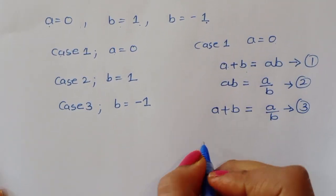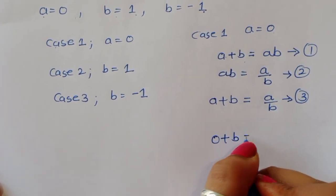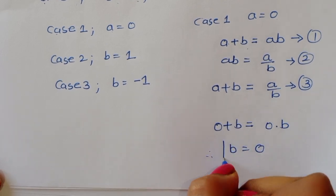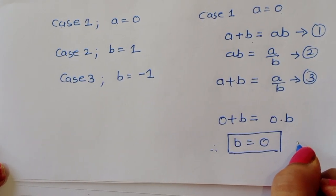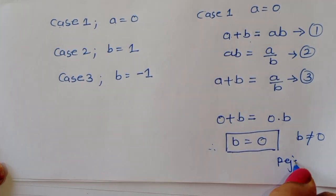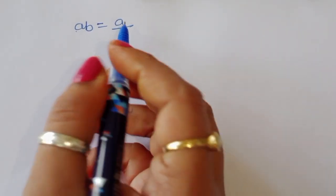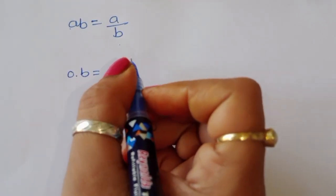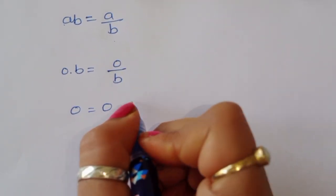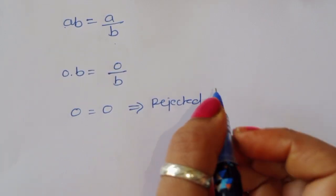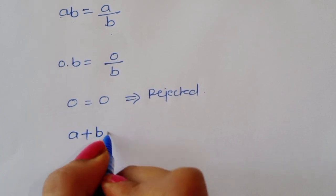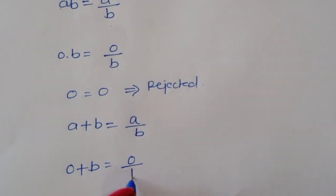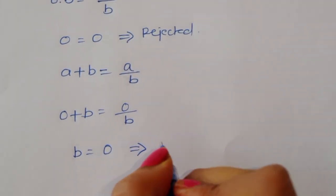Case 1, a = 0: From equation 1, 0 + b = 0·b, so b = 0, which is rejected. From equation 2, 0·b = 0/b gives 0 = 0, also rejected. From equation 3, 0 + b = 0/b gives b = 0, rejected. So Case 1 is rejected.